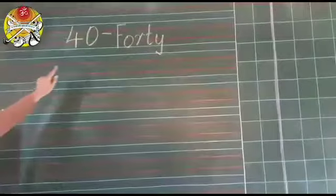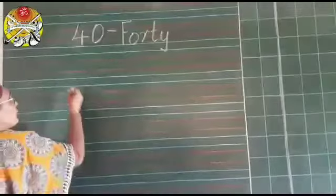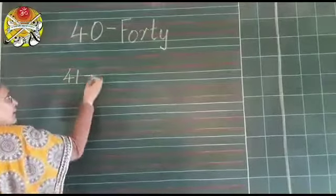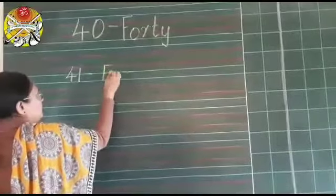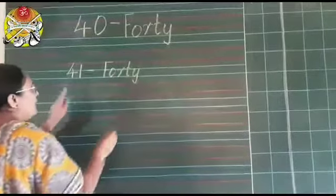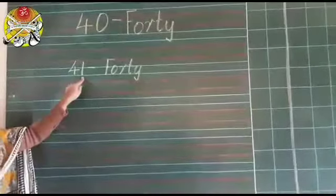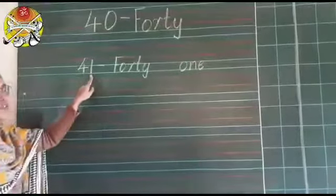Right. Now, what comes after 40? Which number? 41, isn't it? Now, what is the spelling of 40? F-O-R-T-Y. And what is the spelling of 1? O-N-E, 1. So, see children.